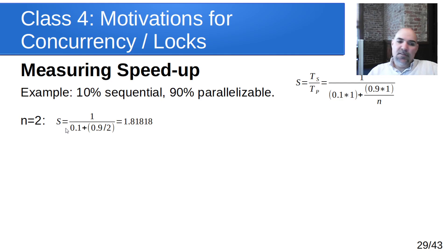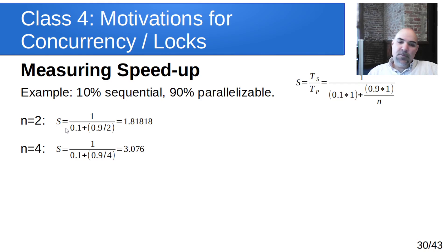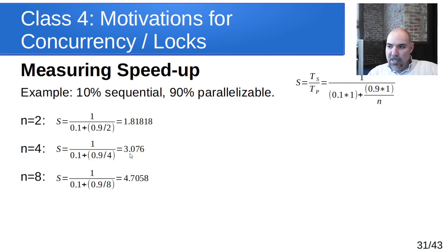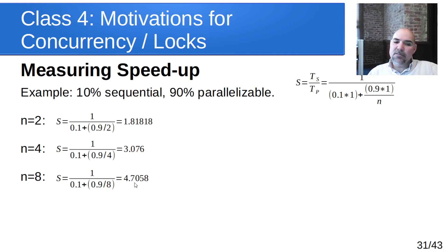With four cores: 1 / (0.1 + 0.9/4) = 3.076 — a little over three times faster than with just one processor. With eight cores: 1 / (0.1 + 0.9/8) = 4.7 times faster. So with eight cores we're a little over four-and-a-half times faster, but not quite five times.